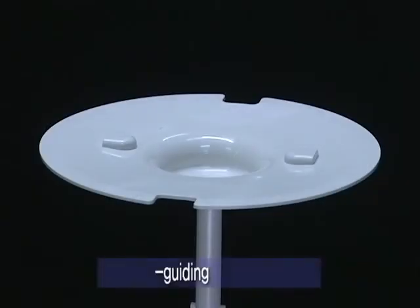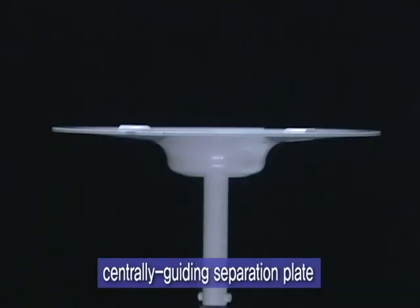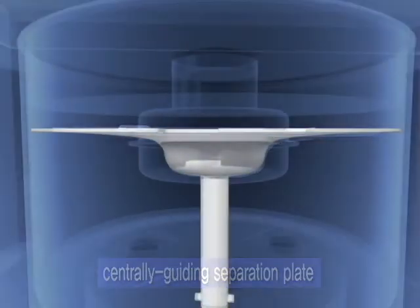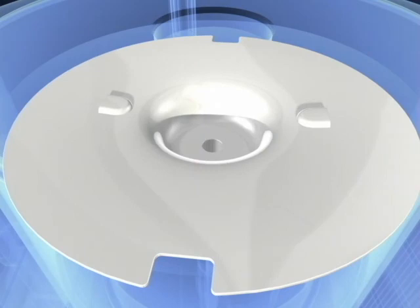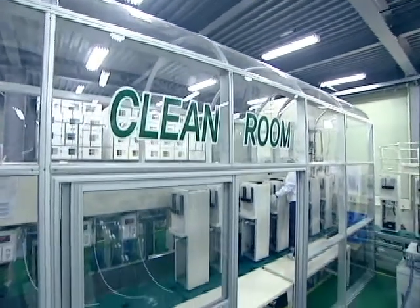Another one of Filio 915's secrets is the centralized partition plate. Installed inside the Filio 915, the centralized partition plate is structured in a way that minimizes the penetration of foreign particles in the reservoir tank and optimizes the cleanliness of drinking water.